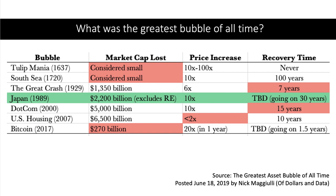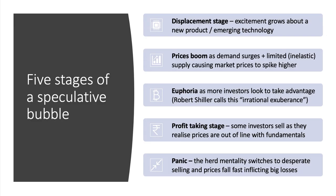According to Nick Maggiulli's blog, 'The Greatest Asset Bubble of All Time,' looking at three indicators — the scale of lost market capitalization, the scale of the price increase, and the length of time it takes for prices to recover — the tulip mania was relatively small, as was the South Sea Bubble in the early 18th century. The Japanese property bubble is, according to his argument, the biggest bubble of all time. The recovery time is now 30 years and rising.